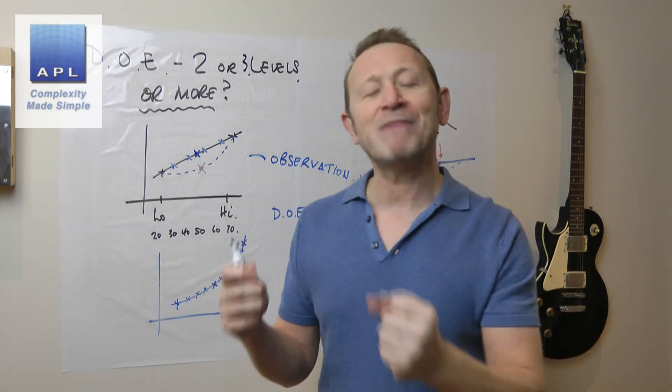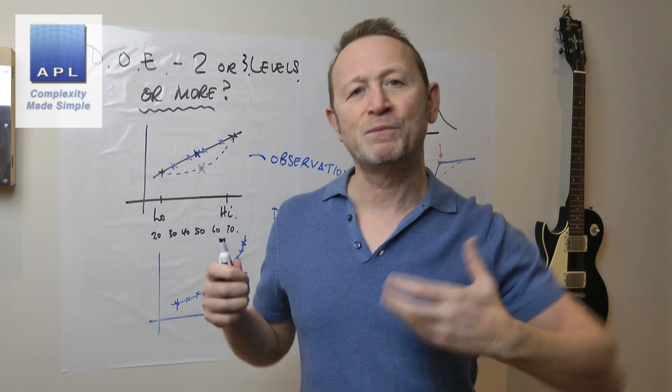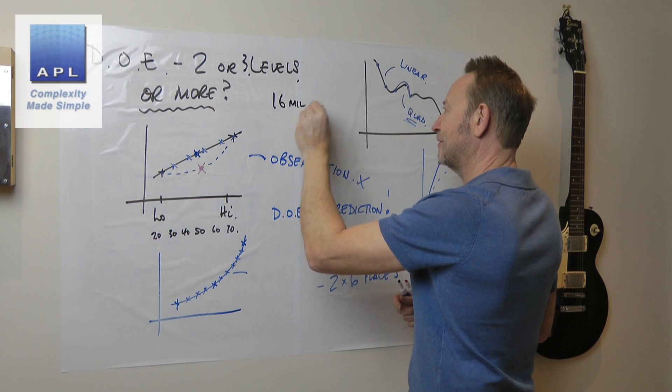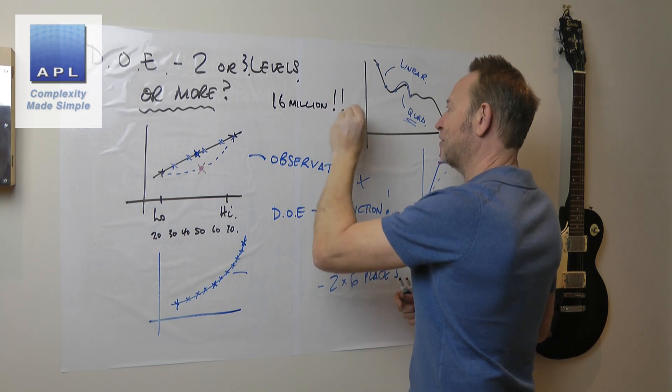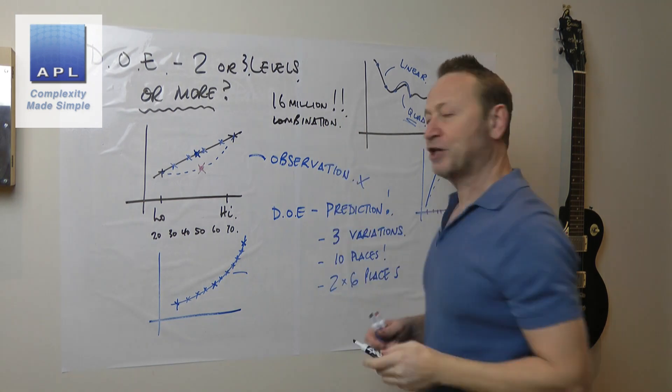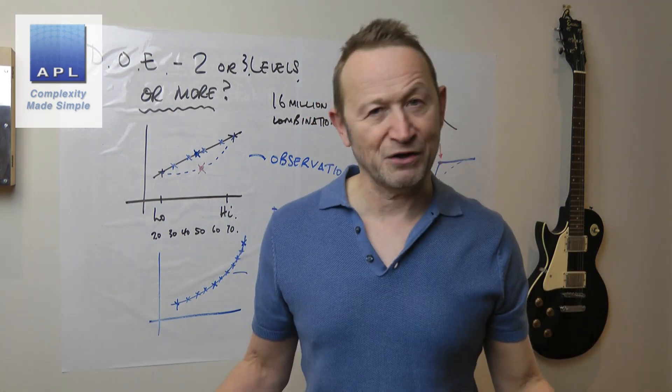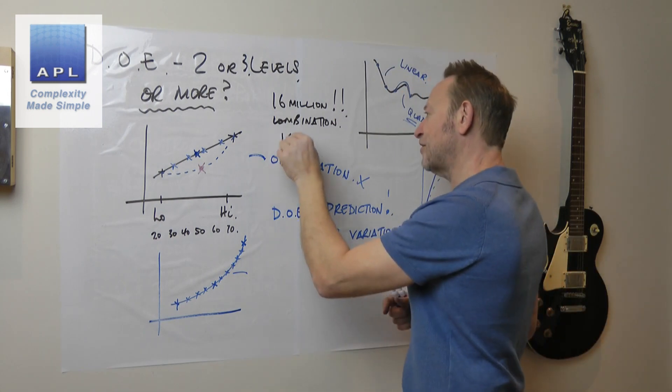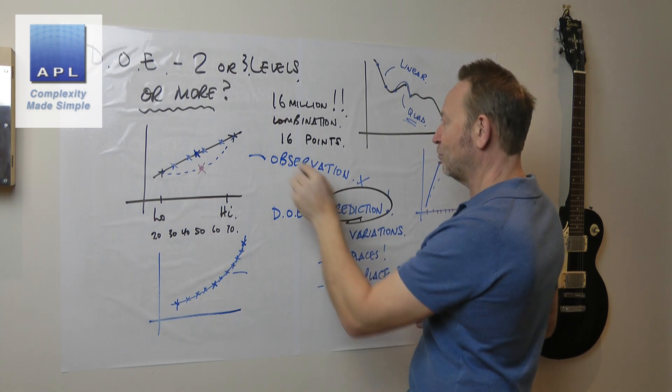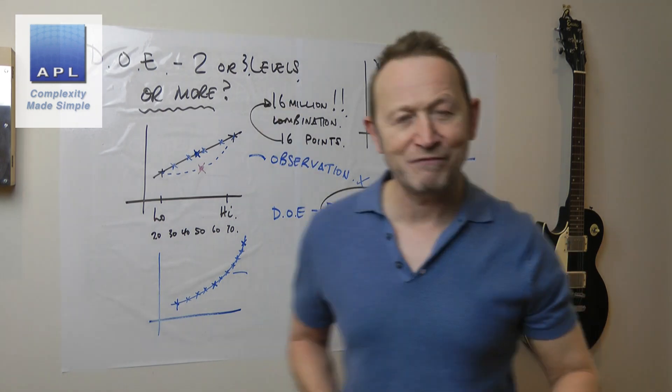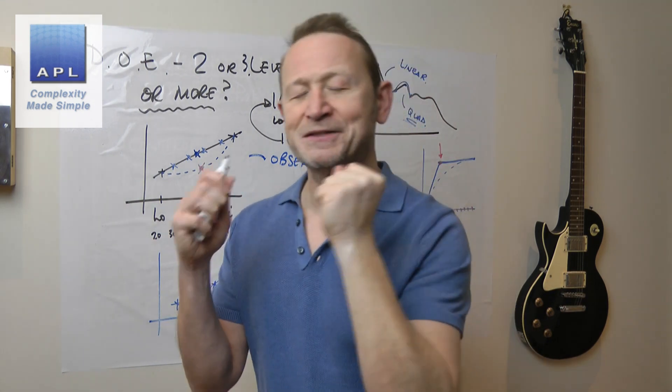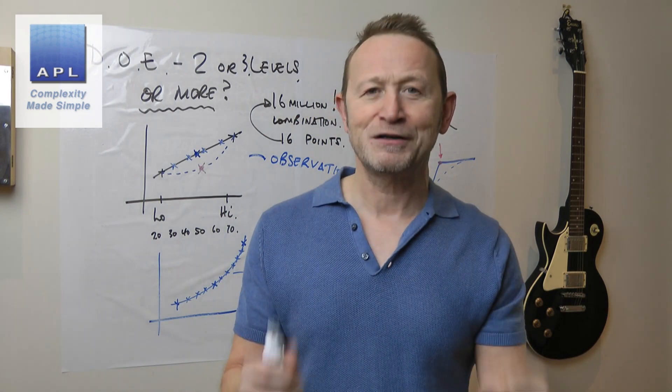Remember, that's what the maths is about. The maths is the ability to predict. So I do some DOEs where there are literally 16 million combinations that the machine could be set up in. We can't do that by observation. We only have to test 16 points and then what do we do? We predict the points that we haven't been to. That's the power of design of experiments. It's the fastest way to make the most amount of money.